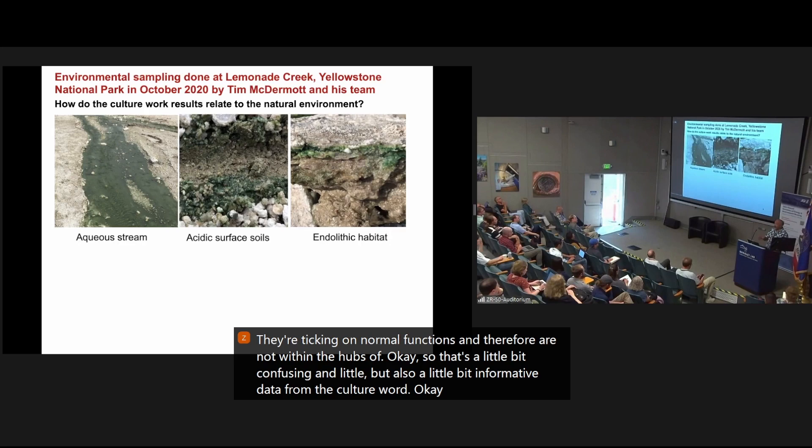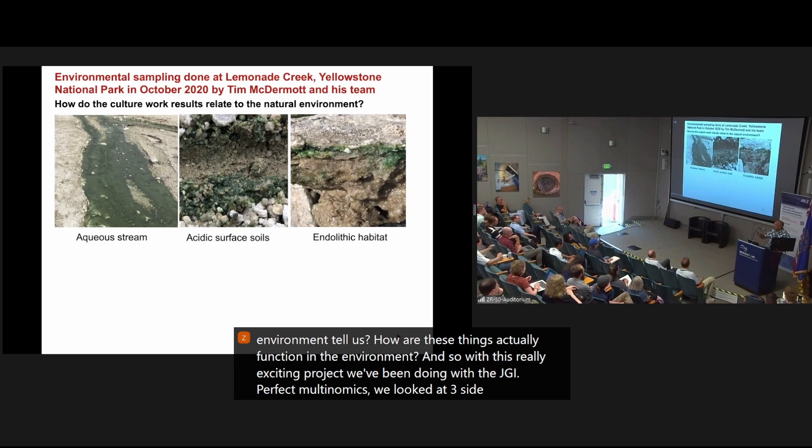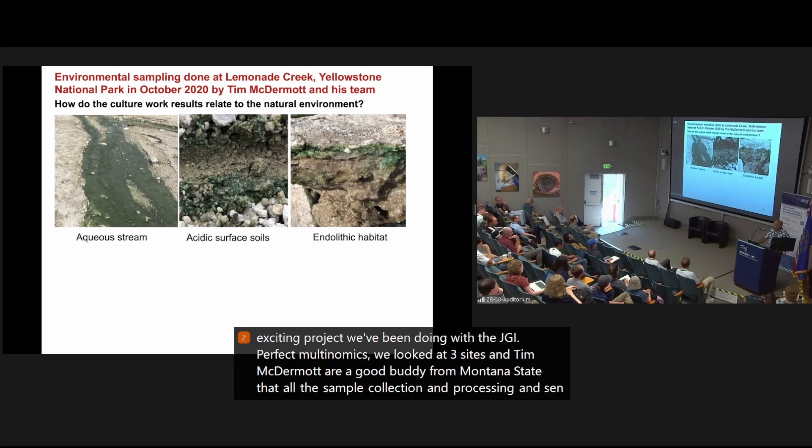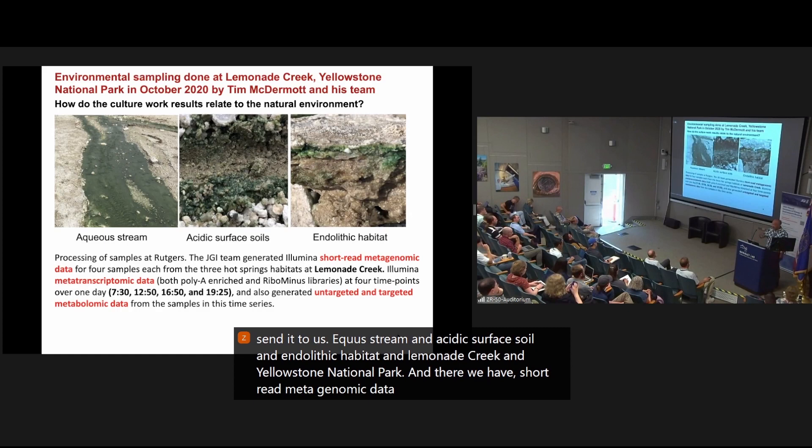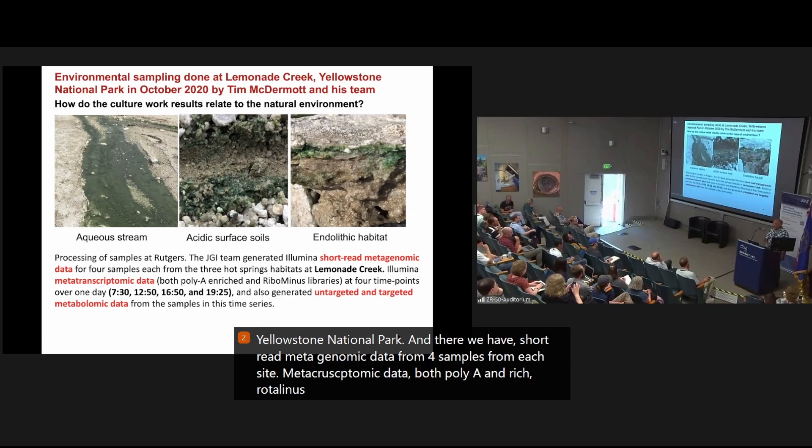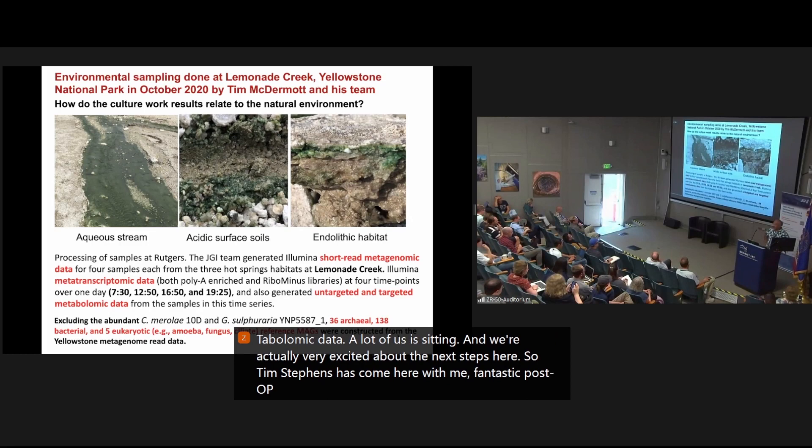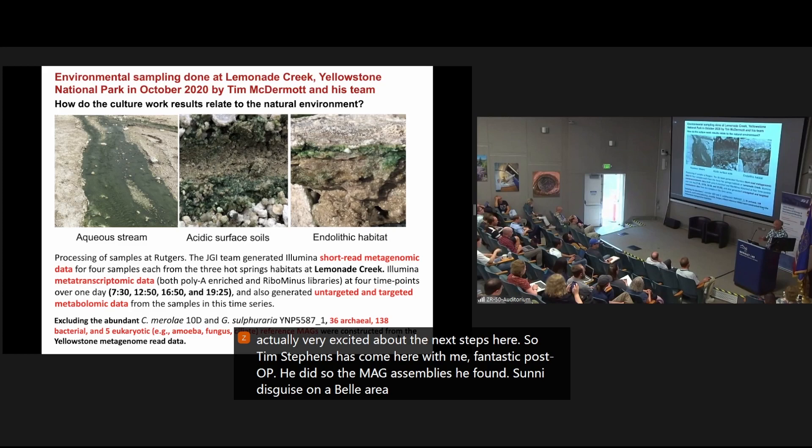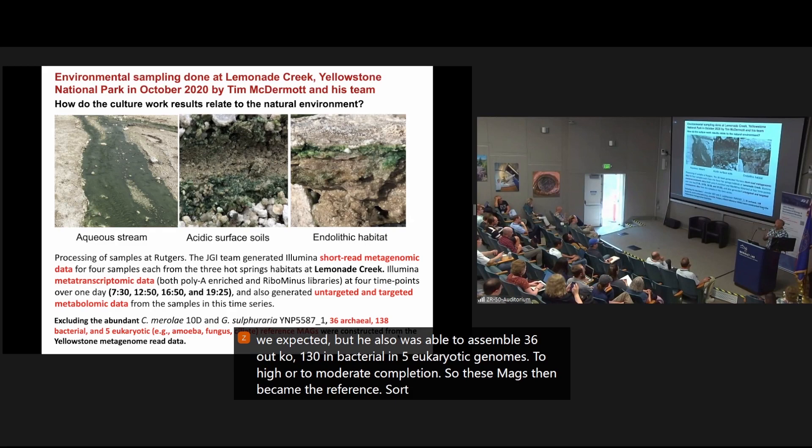Okay, so that's a little bit confusing and little, but also a little bit informative data from the culture work. What does the environment tell us? That's how are these things actually function in the environment? And so with this really exciting project we've been doing with the JGI covering multi-omics, we looked at three sites and Tim McDermott, our good buddy from Montana State, did all the sample collection and processing and sent it to us and aqueous stream and acidic surface soil and endolithic habitat at Lemonade Creek in Yellowstone National Park. And there we have short-read metagenomic data from four samples from each site, metatranscriptomic data, both poly-A and ribosomal-minus by four time points, untargeted and targeted metabolomic data. This is all, a lot of this is sitting and we're actually very excited about the next steps here. So Tim Stevens has come here with me, fantastic postdoc. He did, so the MAG assemblies, he found cyanidioschizon and galdieria as we expected, but he also was able to assemble 36 archaeal, 130 bacterial and five eukaryotic genomes to high or to moderate completion. So these MAGs then became the reference genome for looking at gene expression and distribution of species and whatnot.